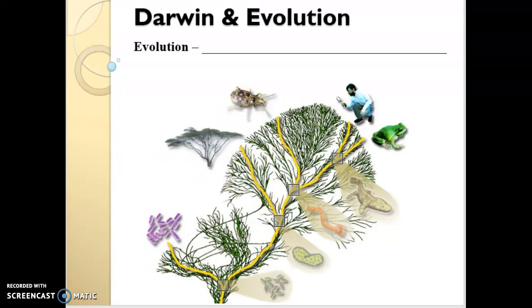Evolution is a theory. When we use the word theory in science, it means it is supported by massive amounts of evidence. It is not a guess. Theory means supported by evidence. So as we get into this unit, this is the one where people often say, 'Well, I don't believe it because it's just a theory.'